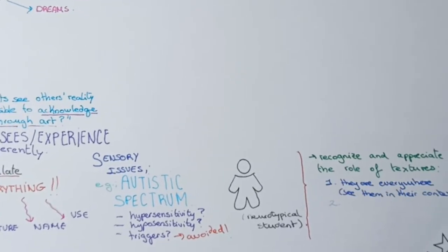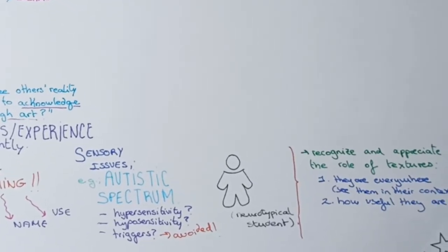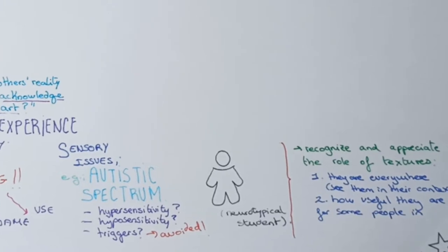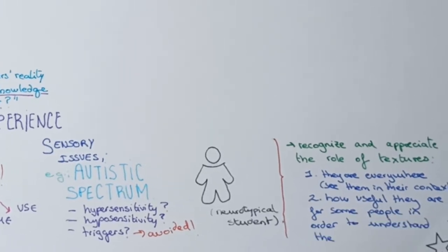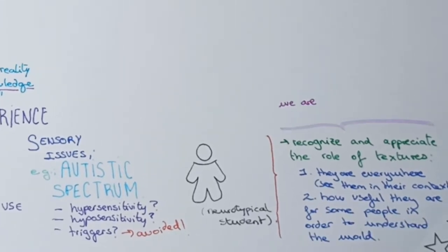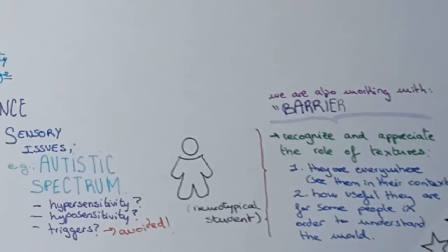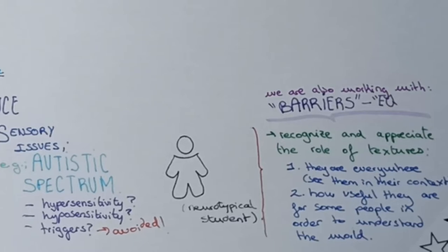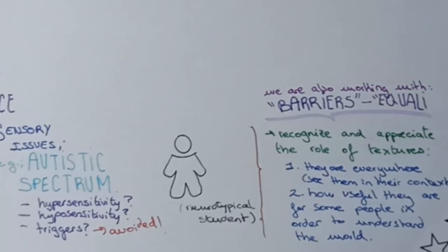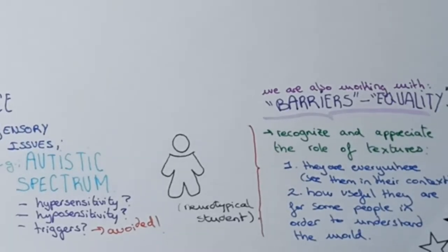Hence, neurotypical students would learn to appreciate the textures that surround them, going beyond and attributing meaning to them — how useful and important they are. Therefore, the topics of barriers and equality are also dealt with through our research piece and final artwork.